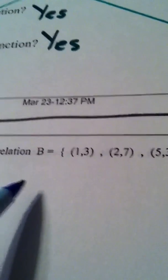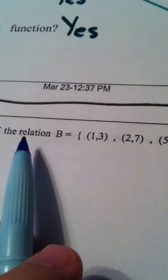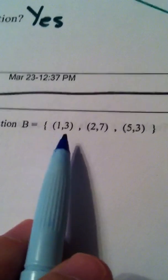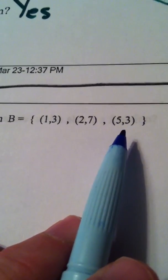we're asked to find the inverse of the relation B. Remember, a relation is a set of ordered pairs. B is made up of the ordered pair 1,3, 2,7, and 5,3.